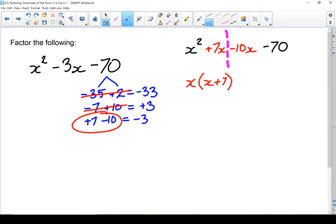Now let's look at the back half. Out of the minus 10x and the minus 70, I can factor a minus 10 out of both of those. I'm left with an x plus 7. Remember, minus 70 divided by minus 10 equals plus 7. Watch those signs. It's very important.